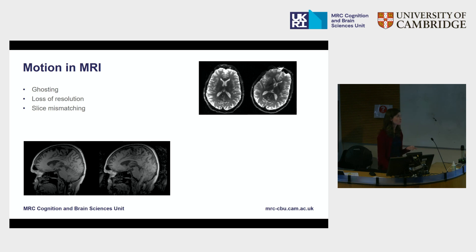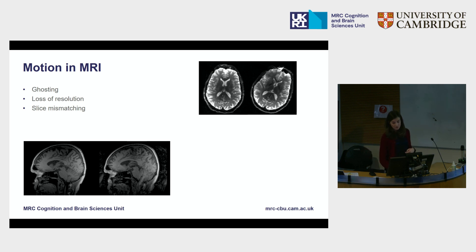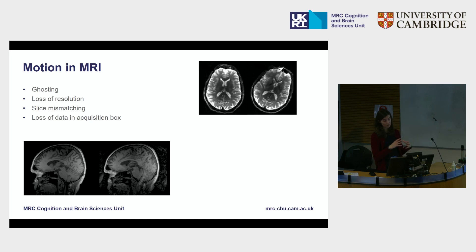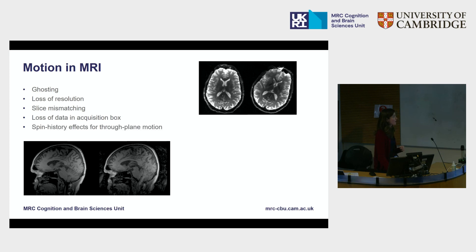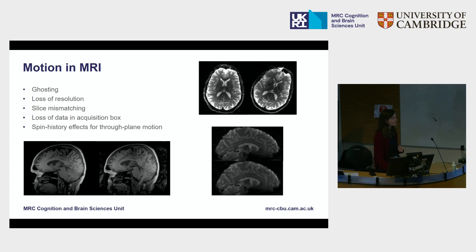If the movement is very extreme and we're collecting high-resolution data, we usually have quite small acquisition boxes. In the extreme case, you can also lose data because the brain might move outside of your acquisition box, so the region of interest may suddenly be cut off. Another classic effect is spin history effects due to through-plane movement — that's the striping pattern visible here, where all those stripes down the brain reflect movement through the plane.